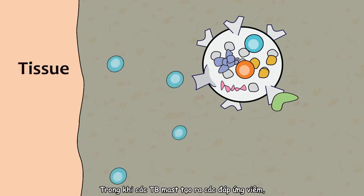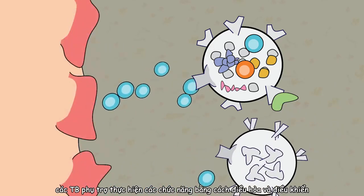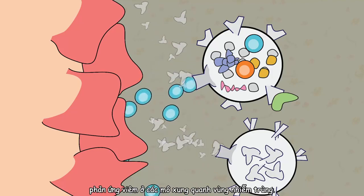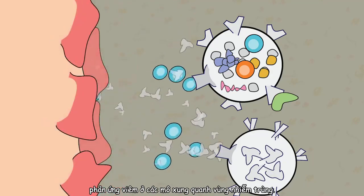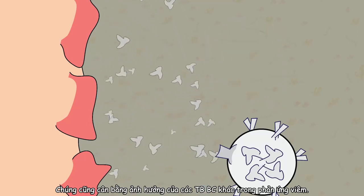So while mast cells are producing an inflammation response, auxiliary white cells complement the function by helping to mediate and control the inflammation reaction in the tissues surrounding the infected area. They also balance the effects of other white cells that incite inflammation.